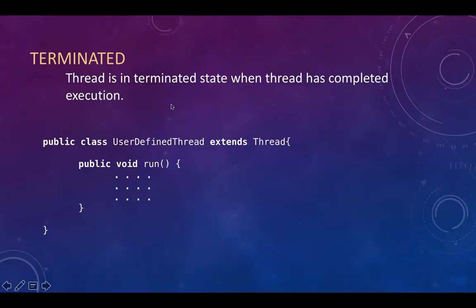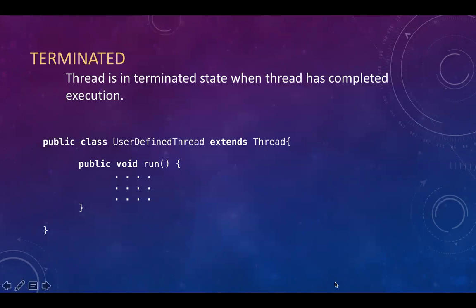Terminated is the state when a thread completes its execution. As soon as the run method completes, the thread's execution process finishes and hence it goes to the terminated state. That covers the concept of the states of a thread. The next concepts of multithreading will be covered in the next part.